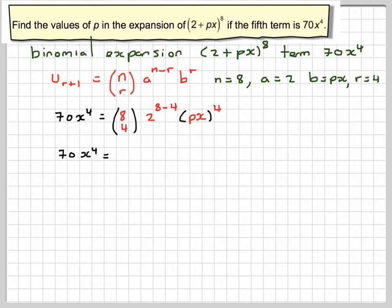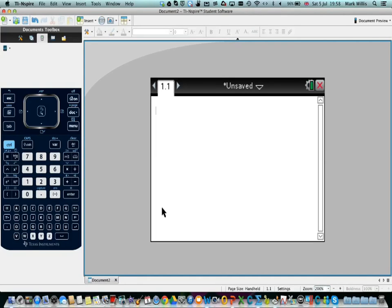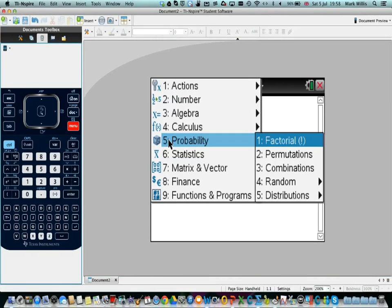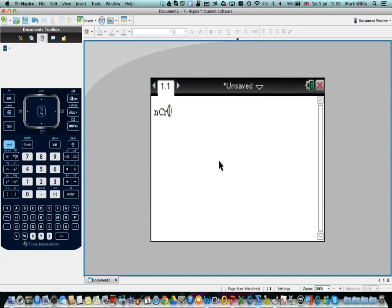So 70x to the fourth, now we can find 8C4 on our calculator. We're going to our calculator and we're going to Calculation Mode, going to Menu and selecting probability number 5, number 3 combinations and putting 8, 4 and we get the answer 70.